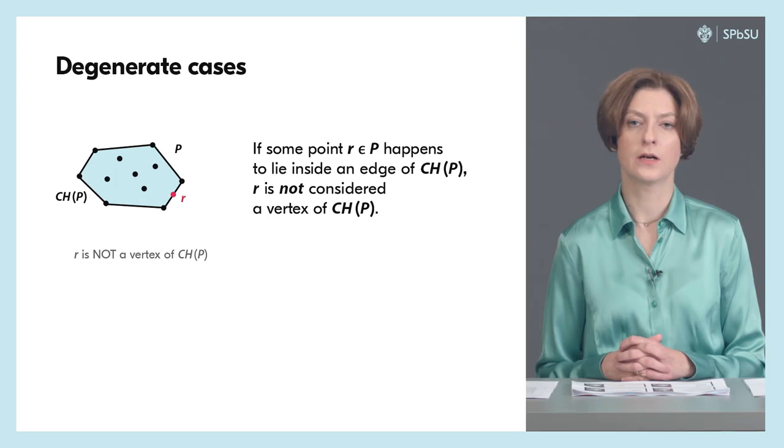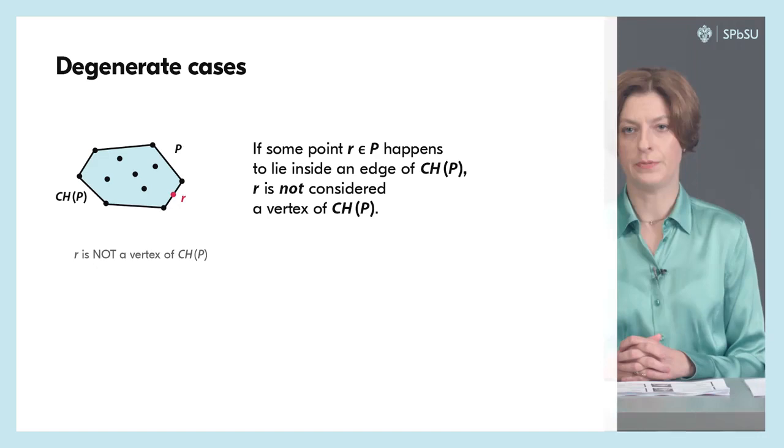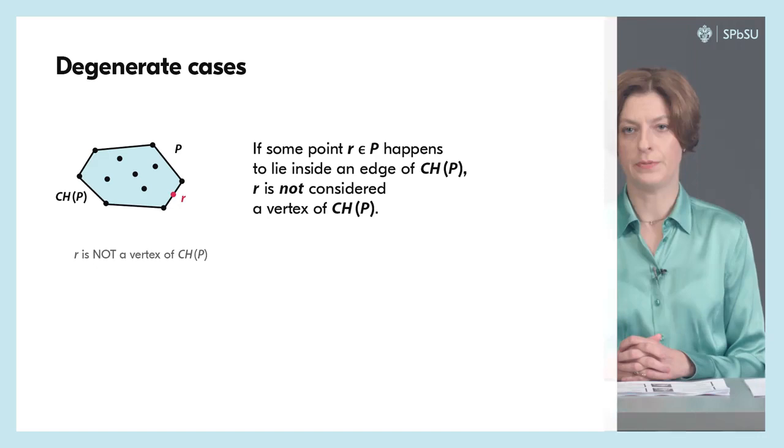Now let us eliminate the non-degeneracy assumption that allows no three points from P to be collinear. We will adopt the following convention: if for some edge of the convex hull there is a point in P lying inside this edge, it is not classified as a vertex of the convex hull.